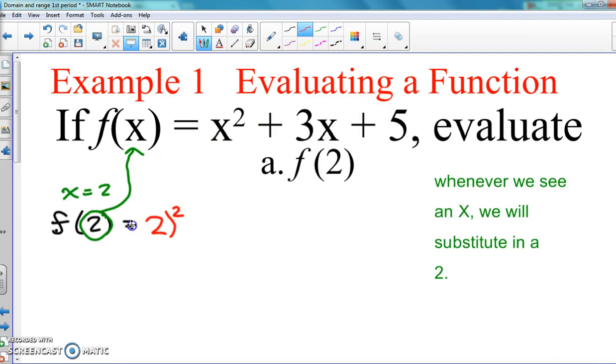So for this next x we put a 2 there, and plus 5. So again, whenever we see an x we put a 2 in that spot. So here, 2² is 4, and then 3 times 2 we know is 6, and plus 5.